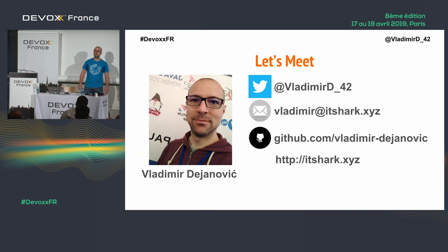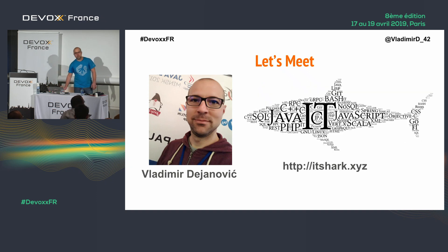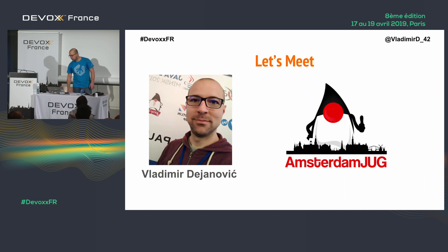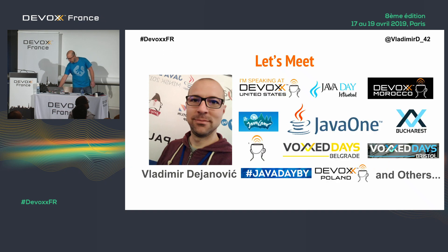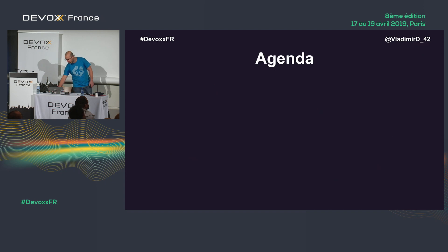My name is Vladimir Dejanovic. I've been part of the professional IT scene since 2006 — in other words, I've been getting paid for developing software since 2006. I'm founder and leader of the Amsterdam Java User Group, and I give talks at conferences. I'm also a Java Rockstar and Code One Star, but enough about me.